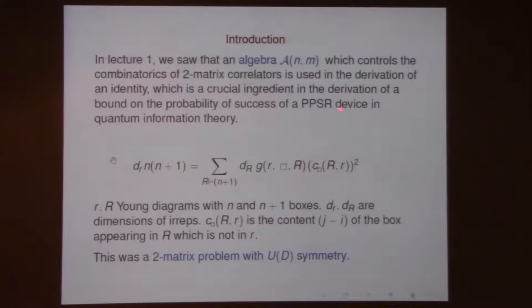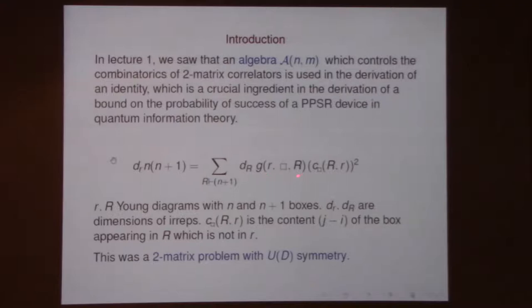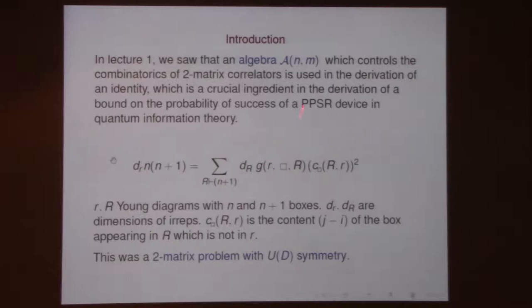There was a procedure called storage and retrieval of a unitary operator, and something called perfect probabilistic reconstruction, with a probability associated to it. In order to find the bound — the best probability you can get — it was useful to understand an identity involving Littlewood-Richardson coefficients alongside dimensions of representations of symmetric groups and the contents of Young diagrams. It turned out to be possible to give a nice derivation and generalize this using the algebra.